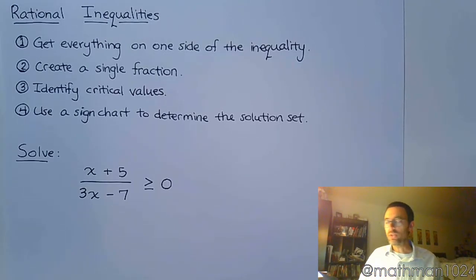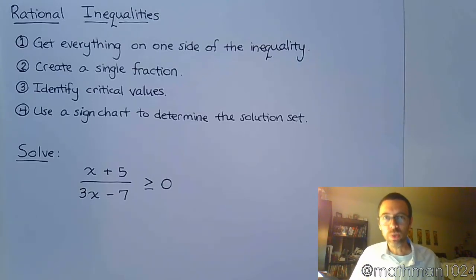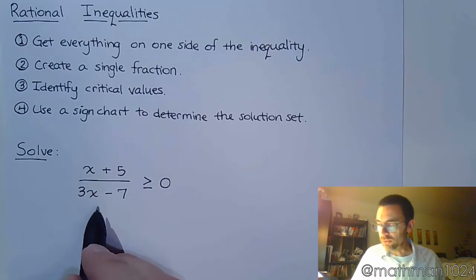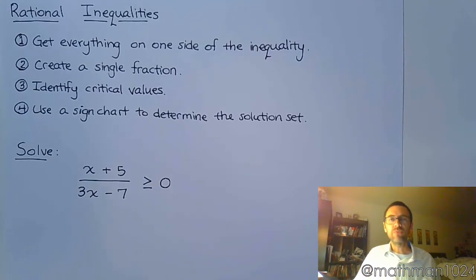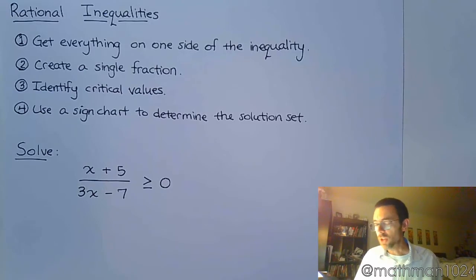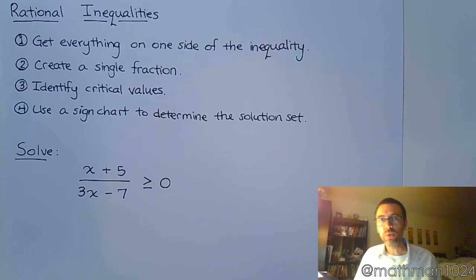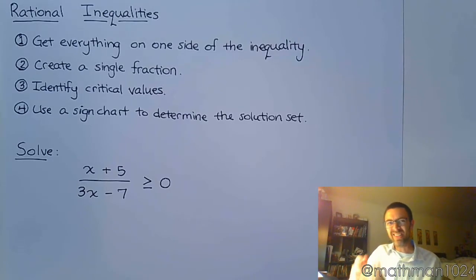With rational inequalities, we need to get everything to one side of the inequality, create a single fraction, and then we're going to identify the critical values from this and use a sign chart to determine the solution set. The way we identify the critical values is by finding out what makes the numerator equal to zero and what makes the denominator equal to zero once you have it as a single fraction.